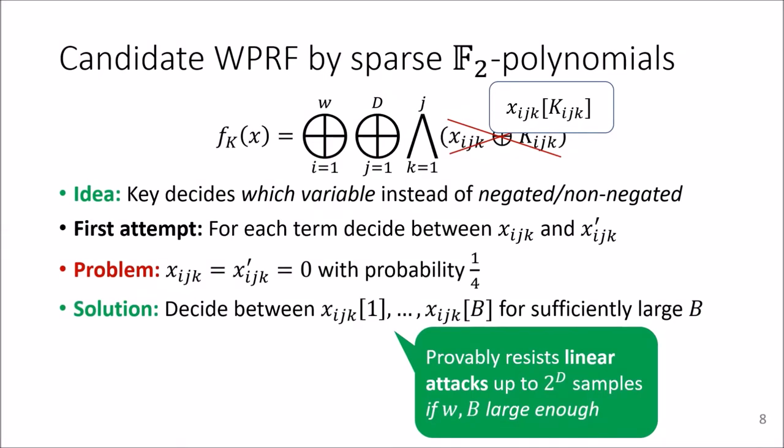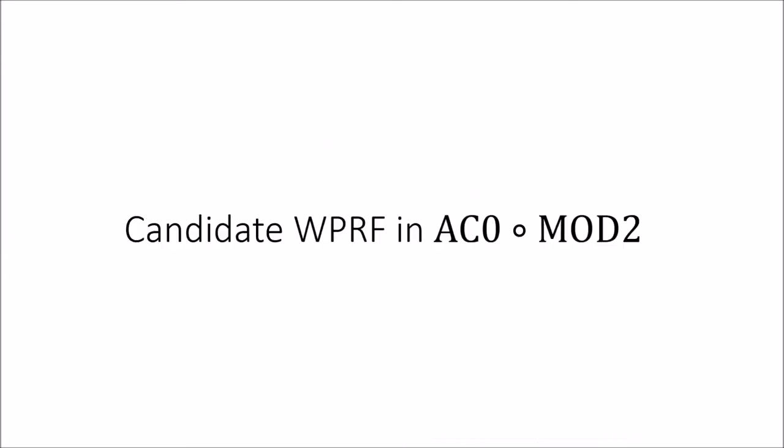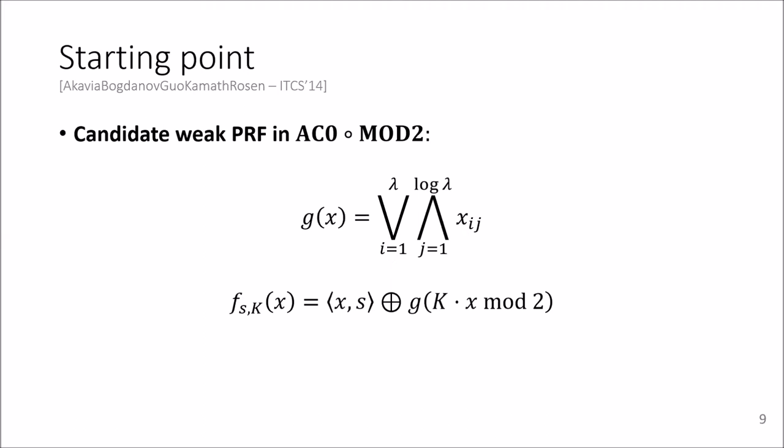So what you can see here is the XOR layers in the top. So the next question we ask in this work is, what if you allow the XOR layer only in the bottom? So what if you go to AC0 on top of parities?